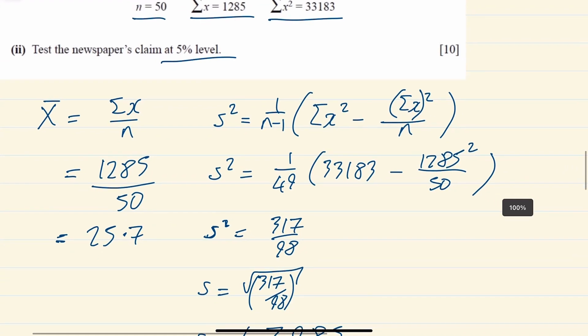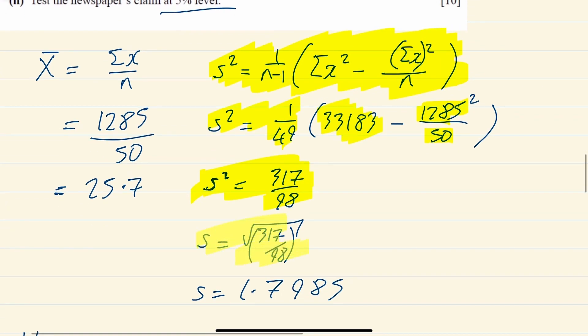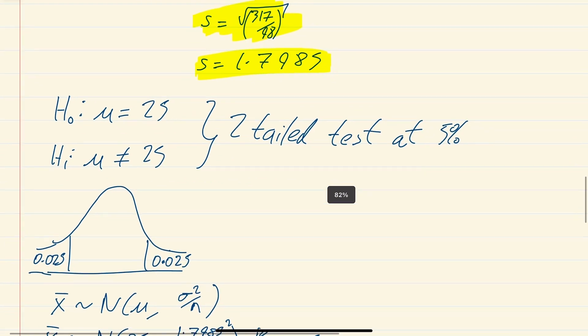We actually have calculated a different thing. We found that X bar in this particular thing is sigma X over n. So 1,285 over 50, which is 25.7. This is the bit that's going to confuse people. This is our estimator of the whole population, and this is the best we can do. This is a bit I don't think CCEA are going to ask because of the elaboration document. So s squared, which is the best estimate we have of the whole population variance, would be 1 over n minus 1, so 1 over 49, times sigma X squared, 33,183, minus sigma X, 1,285, squared over 50. You get s squared equals 317 over 98. Square root that to get your best estimator of your standard deviation, which is 1.7985.